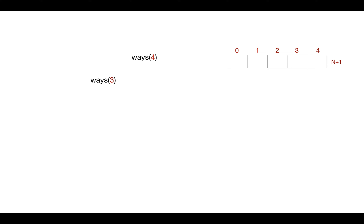We calculate ways to reach the fourth stair by adding ways at the third, second, and first steps. To calculate ways at the third step we go down to the second, first, and then zero — the base condition — which returns one. We update cell zero with one in the array. Ways for one will be one plus zero, which is one, so we update index one with one. For zero, we pick the value at index zero and return one. For negative values, it will always be zero.